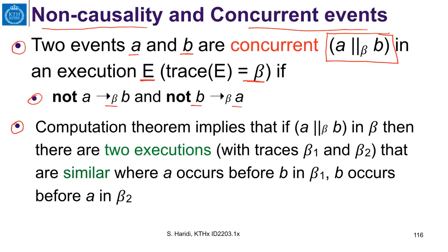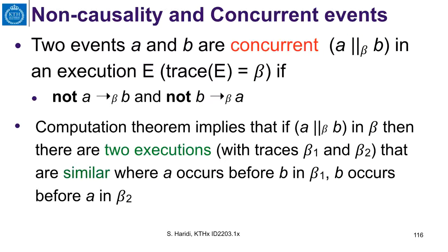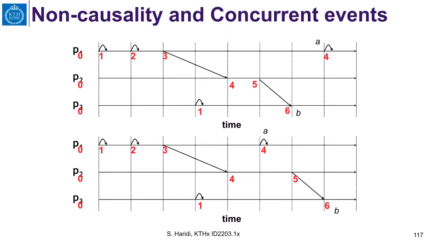The completions theorem we discussed before implies that if two events are concurrent in a trace beta, there are two executions with traces beta 1 and beta 2 that are similar — meaning no process in the system can distinguish between them. In one execution A occurs before B (trace beta 1), and in the other execution B occurs before A (beta 2).